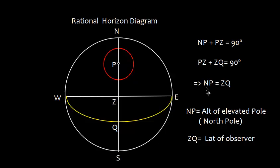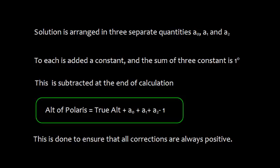NP is equal to ZQ. NP is the altitude of elevated pole, and ZQ is the latitude of observer. The altitude of pole is equal to latitude of observer, and we need to correct this altitude by these correction A0, A1, and A2.